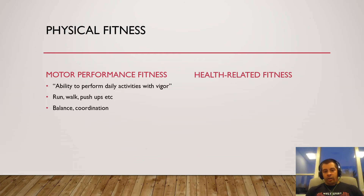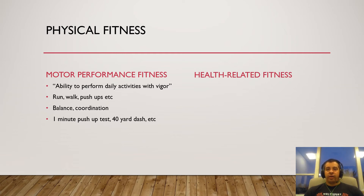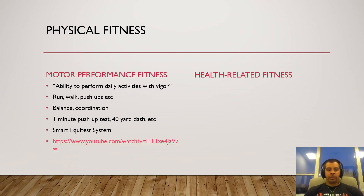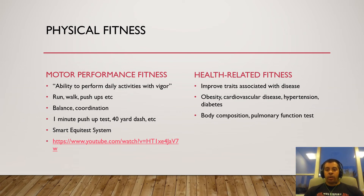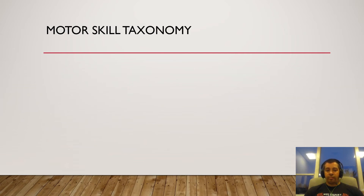Motor performance fitness is the ability to perform daily activities with vigor — running, walking, push-ups, balance, coordination. These are very objective: you can do a one-minute push-up test, a 40-yard dash, a bench press test, a one-mile run. Health-related fitness, on the other hand, focuses on traits associated with disease prevention — obesity, cardiovascular disease, hypertension — and can be assessed through body composition, pulmonary function tests, and VO2 max.